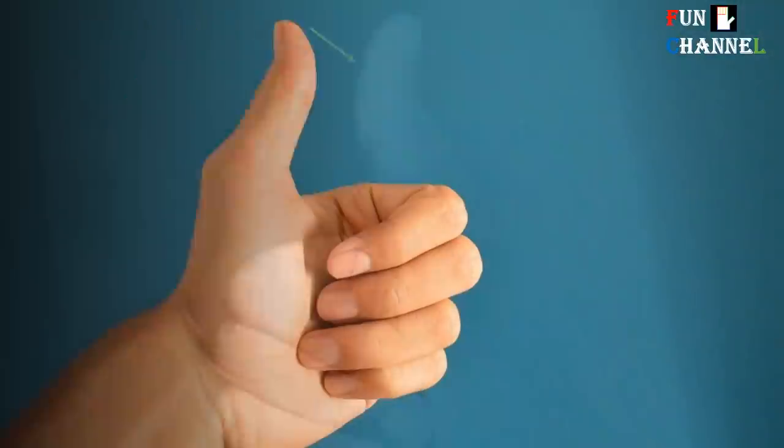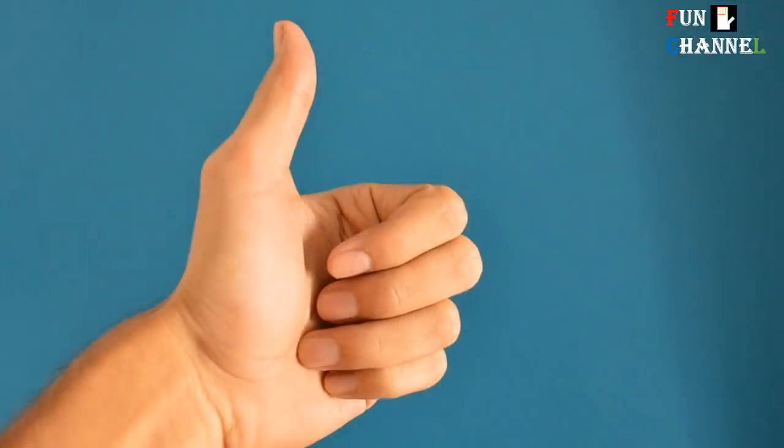If the thumb does not bend backwards after applying pressure to the first joint of the thumb, it is known as a stiff thumb. People with such kind of thumb are stubborn and not easily adaptable in nature.